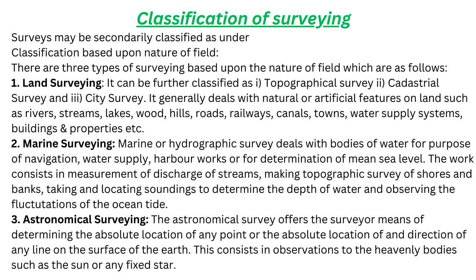Number 3: Astronomical Surveying. The Astronomical Survey offers the surveyor a means of determining the absolute location of any point or the absolute direction of any line on the surface of the Earth. This consists in observations to the heavenly bodies such as the sun or any fixed star.